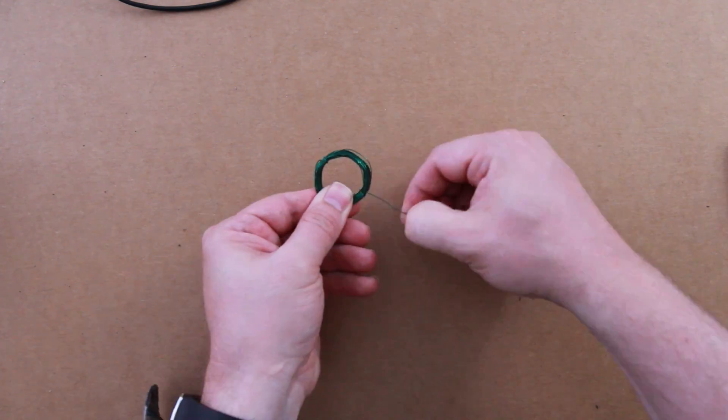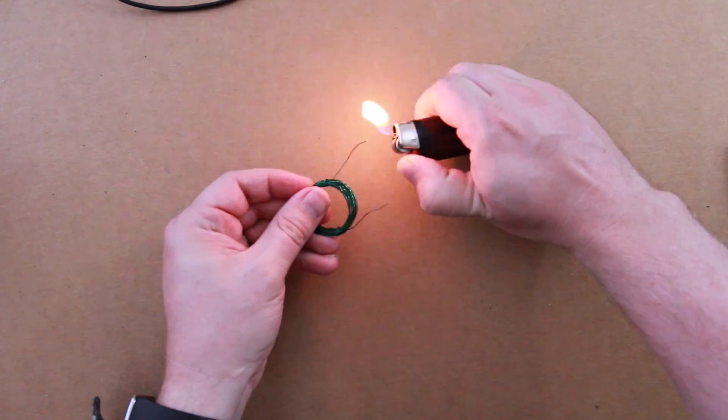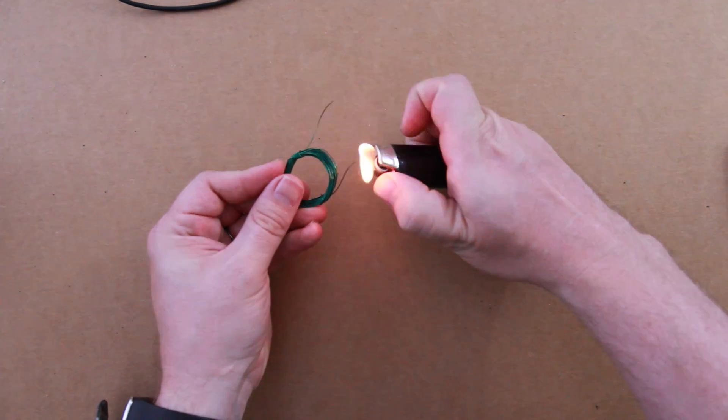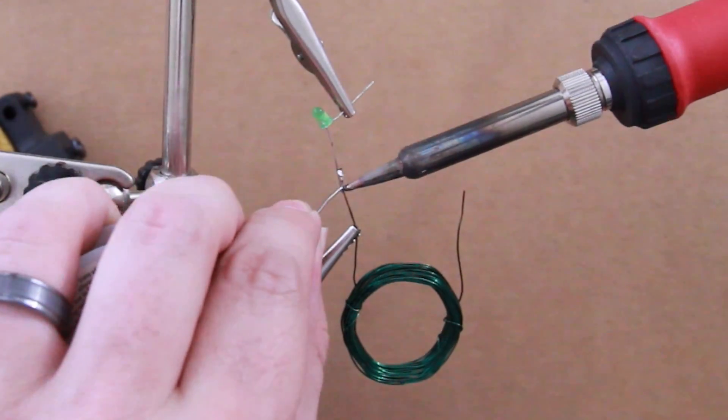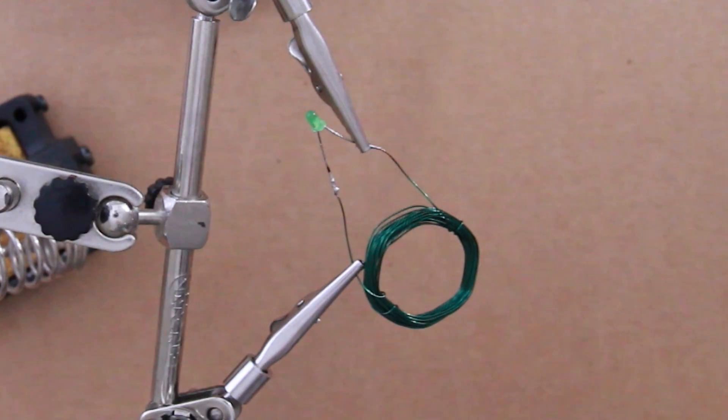If your wire is coated you want to use a lighter to burn the coating off the leads. And then you want to take the LED and solder its leads to the leads of the receiver.